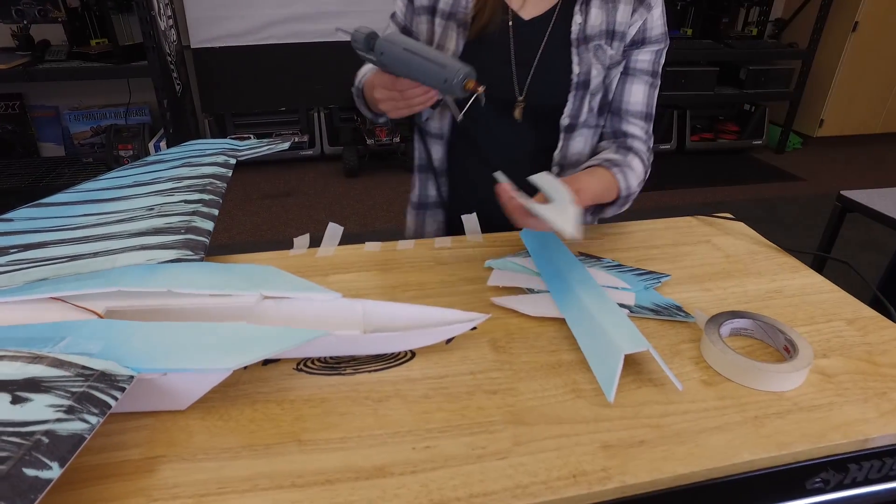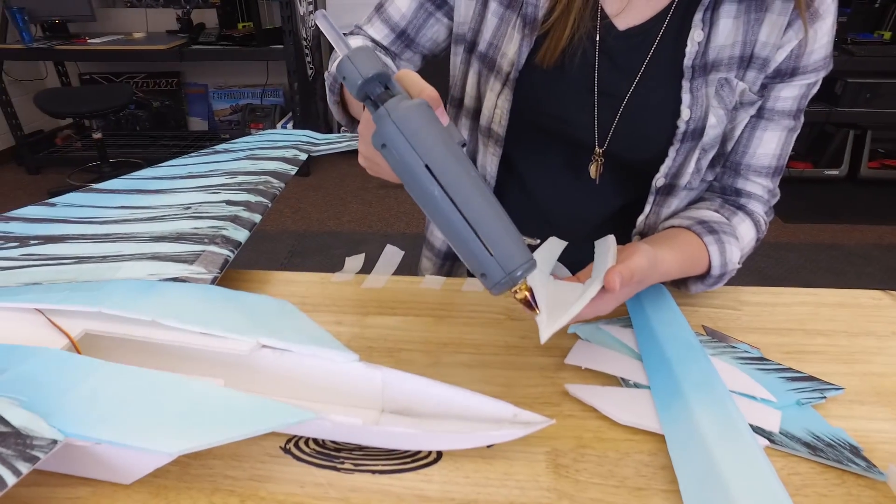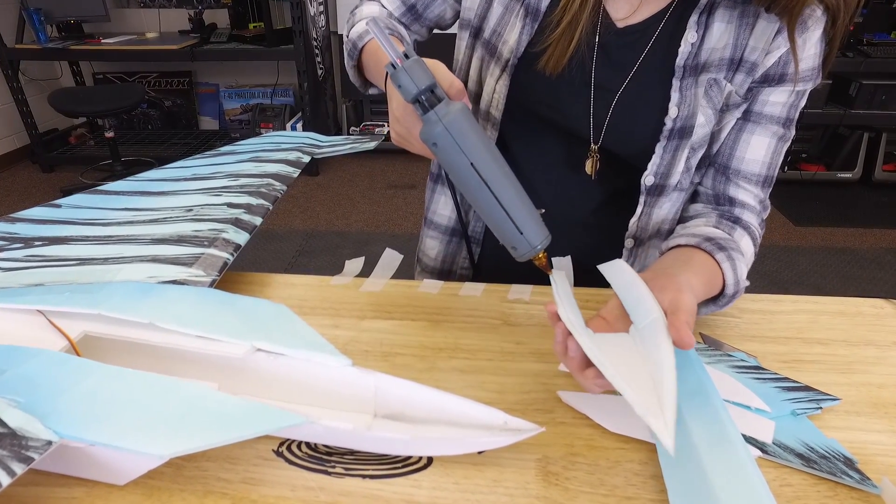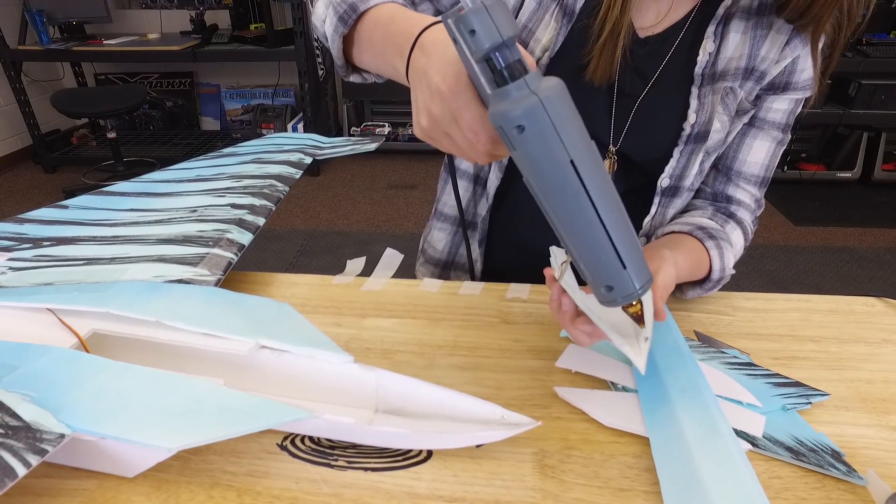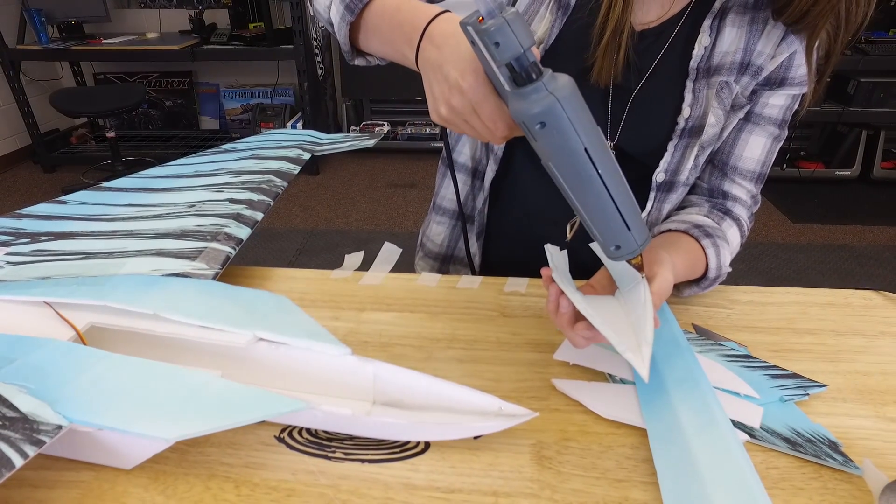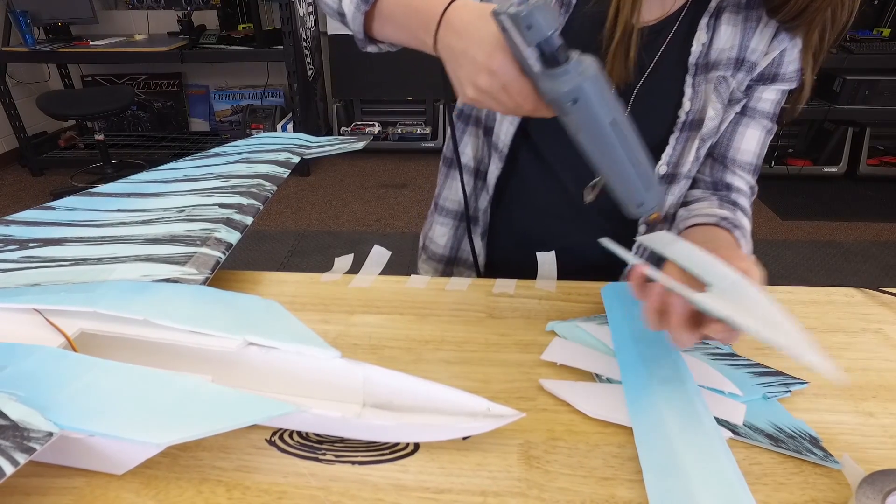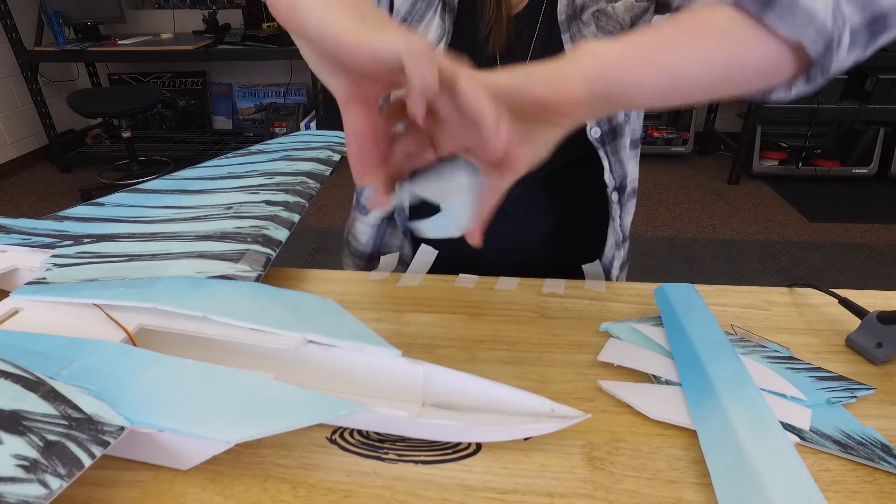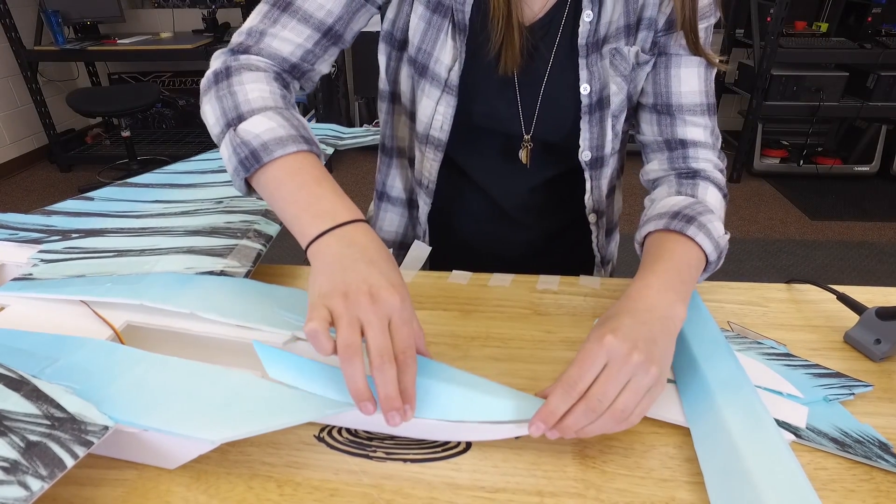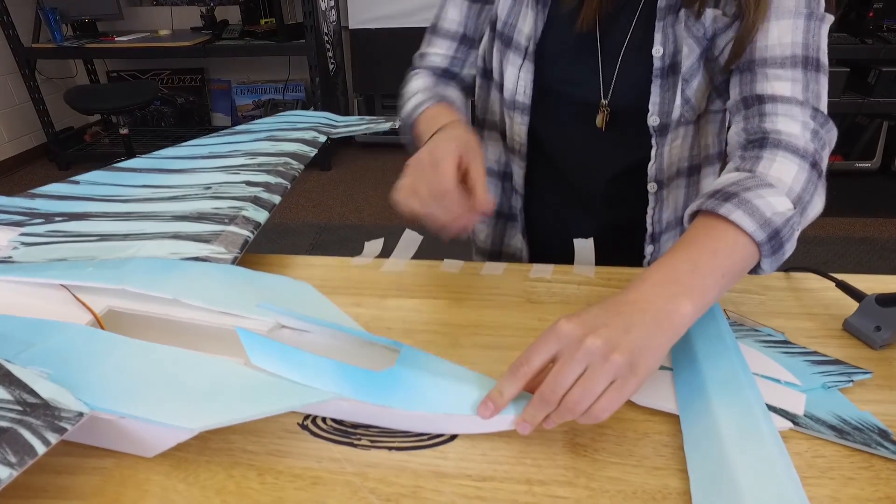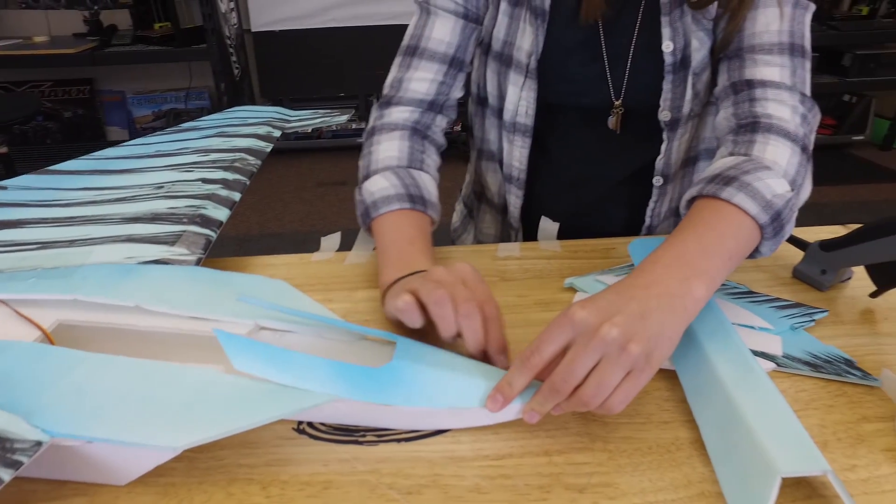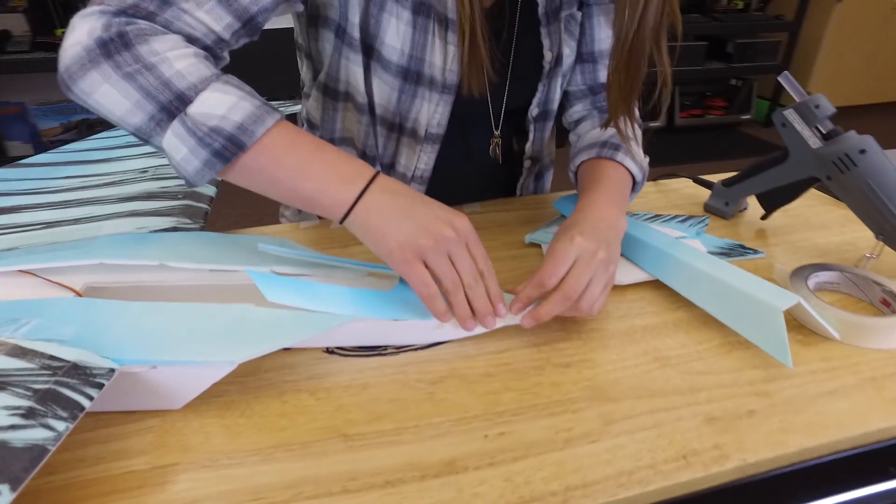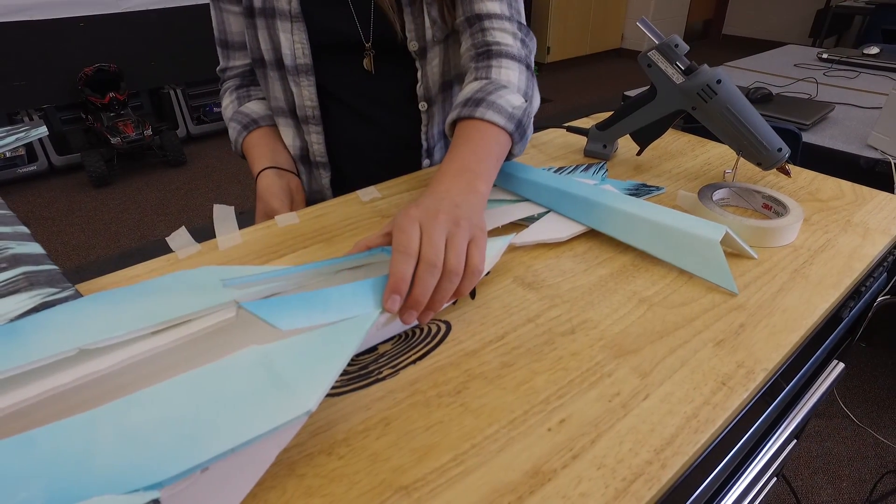And then you're going to throw down some glue just on the sides. And then you're going to start from the front and tape it. And then just work your way to the back.